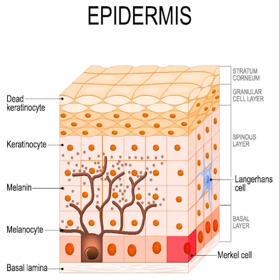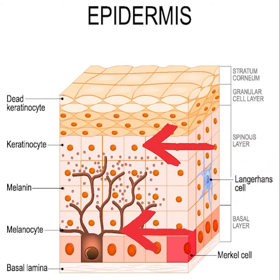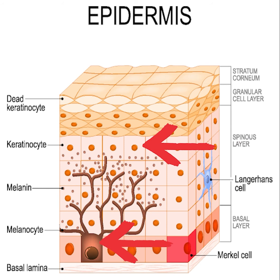So where is this melanocyte troublemaker found in the skin? We need to focus on two specific cell types in your epidermis: keratinocytes and melanocytes, which are found in the deepest layer of the epidermis, called the basal layer.